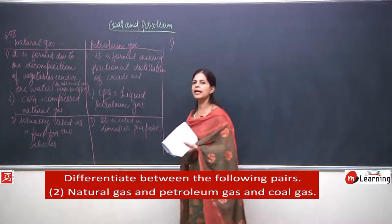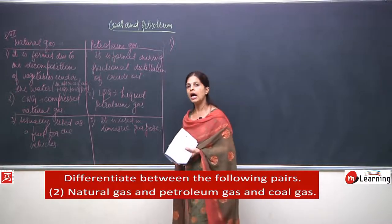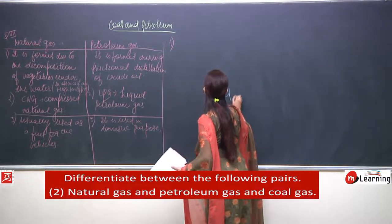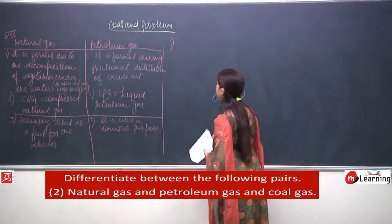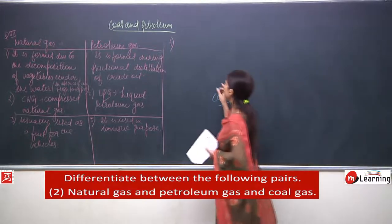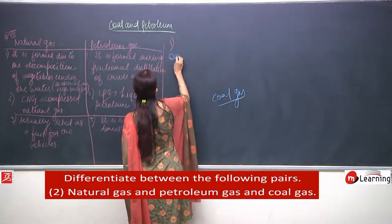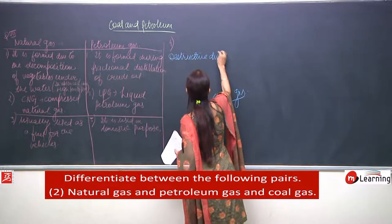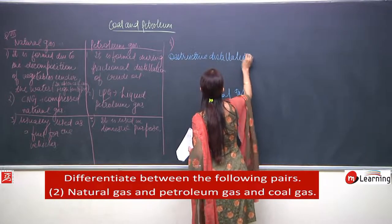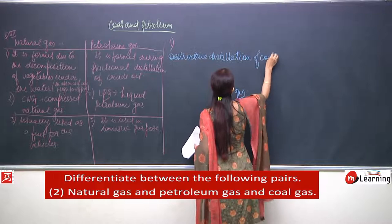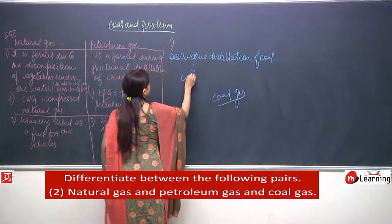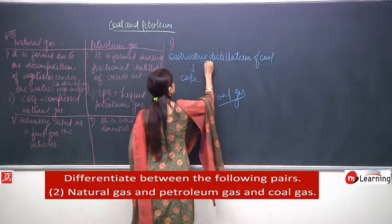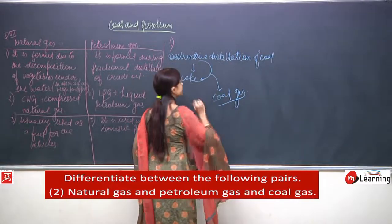Now I'd like to discuss a third gas — coal gas. How is coal gas formed? When destructive distillation of coal is done to form coke, coal gas is also released during that process.